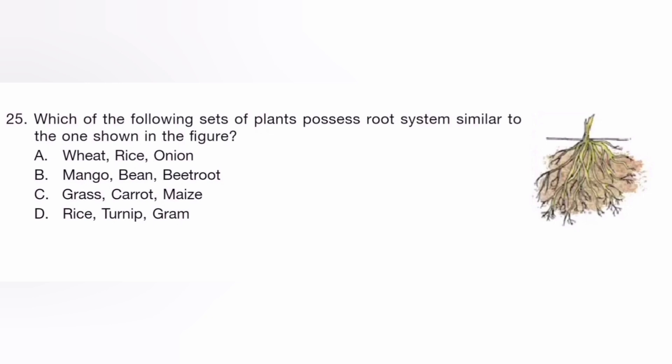Which of the following sets of plants possess root system similar to the one shown in the figure? The answer is A, wheat, rice, and onion.